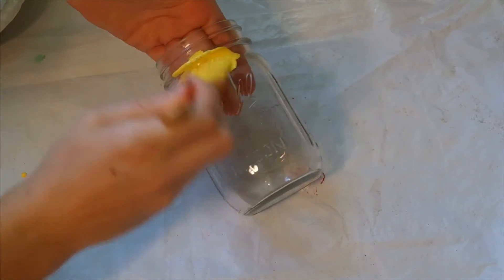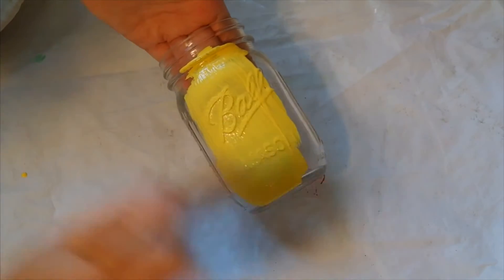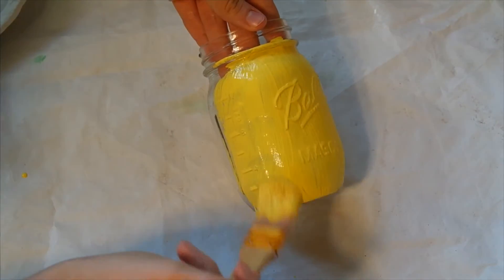For the pencil jar, paint your entire jar yellow, again making sure to paint a little above where you screw on the top. This will likely take multiple coats.